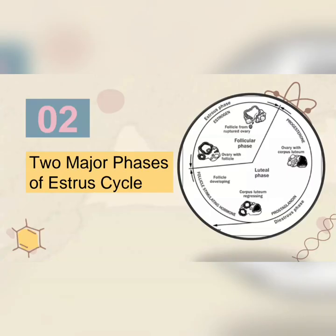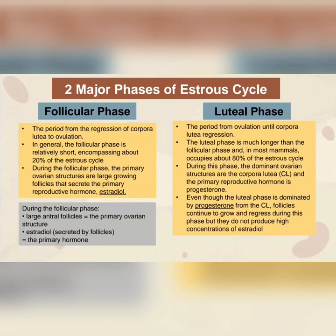For the second part, we have the two major phases of the estrous cycle: the follicular phase and the luteal phase. The follicular phase is the period from regression of corpus lutea to ovulation. In general, the follicular phase is relatively short, encompassing about 20% of the estrous cycle. During the follicular phase, the primary ovarian structures are large growing follicles that secrete the primary reproductive hormone, estradiol. Large antral follicles are the primary ovarian structure, and estradiol secreted by follicles is the primary hormone.